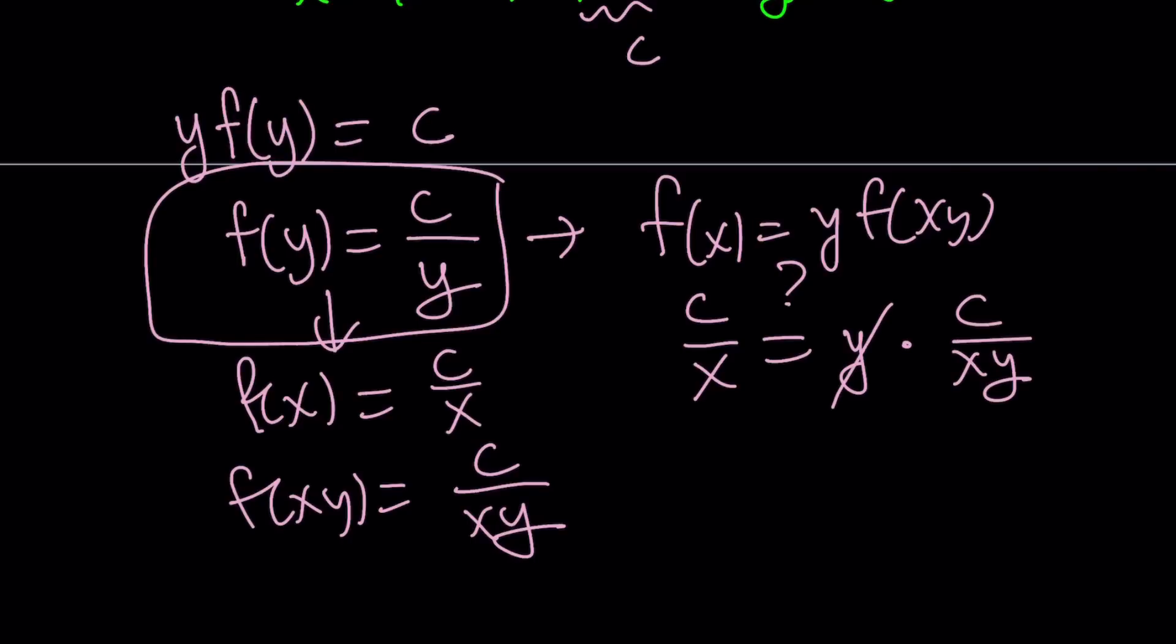Here, y cancels out, and we get c over x equals c over x, which is true, as long as x does not equal zero. Of course, for x equals zero, we have a problem, and forget about x equals zero, because that should be excluded from the domain. I didn't talk about it, but hopefully you figured it out by now. Anyway, so our finding works, which is cool.